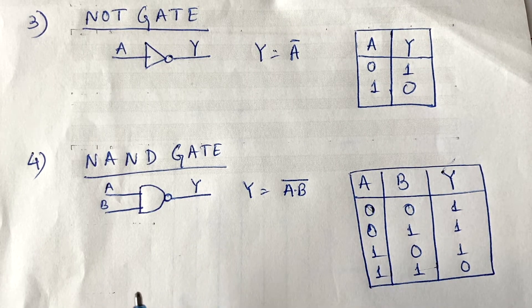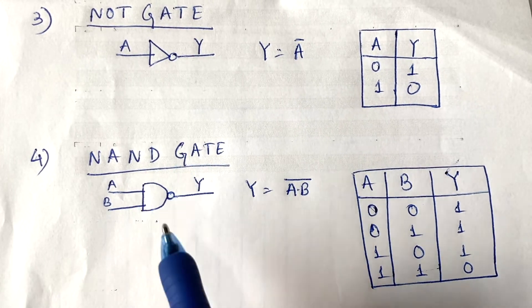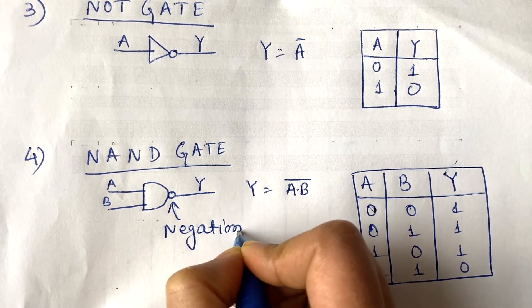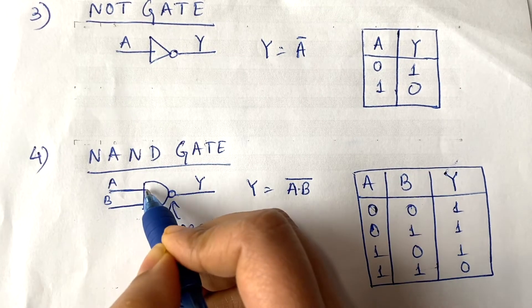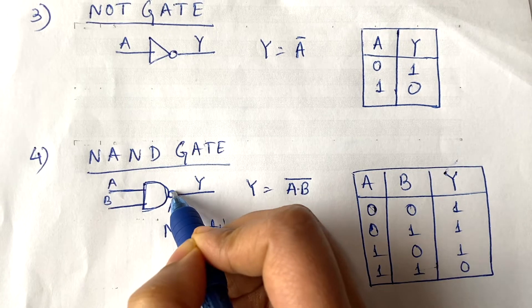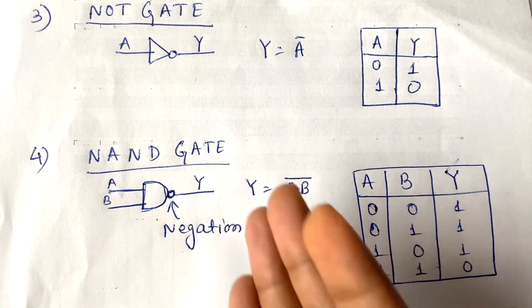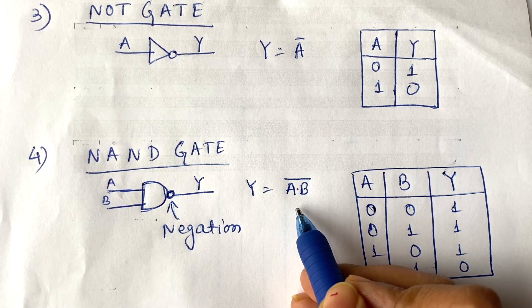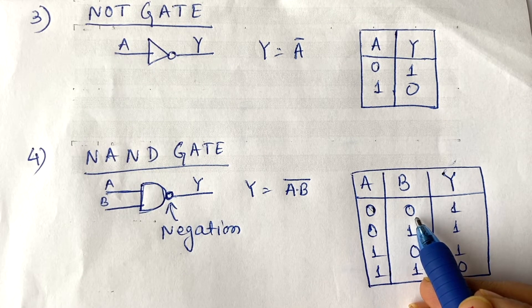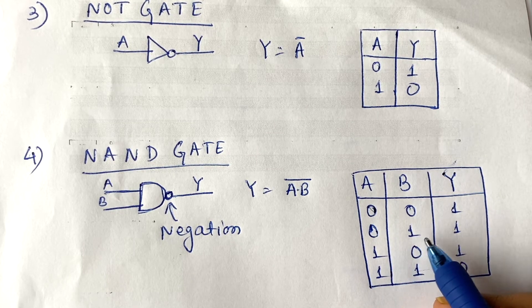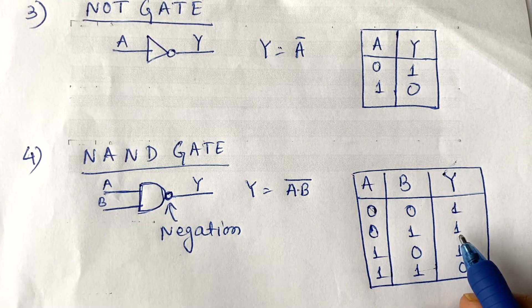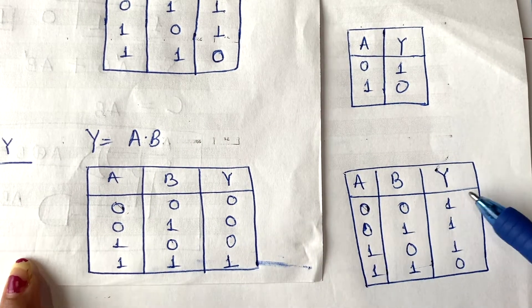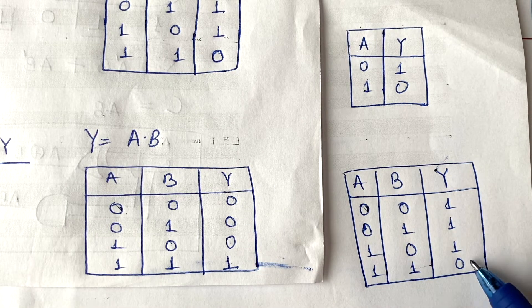Now coming towards the NAND gate — it performs exactly the opposite of the AND gate. The symbol is similar to the AND gate but with a negation bubble. It performs negation on the AND output, giving the opposite of A and B. For example, 0 into 0 gives 0 in AND, but NAND gives 1. Comparing the AND and NAND truth tables, they are totally opposite.